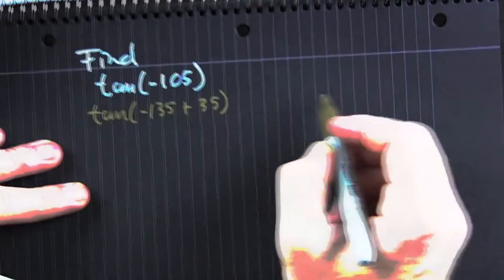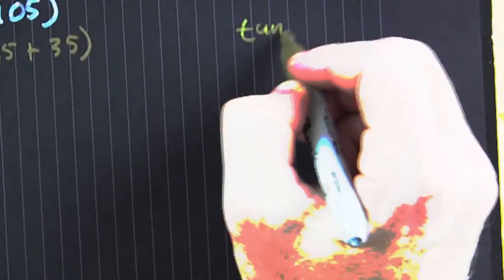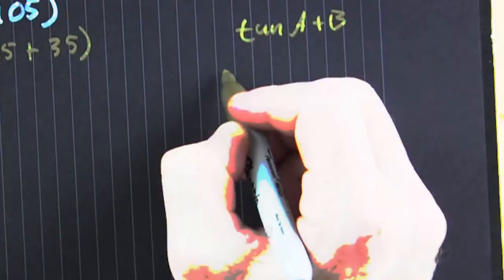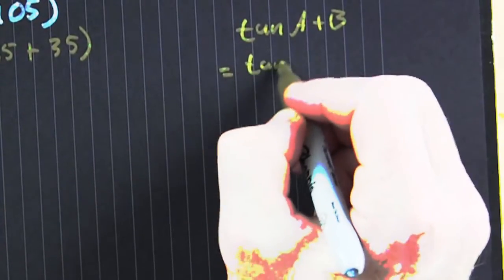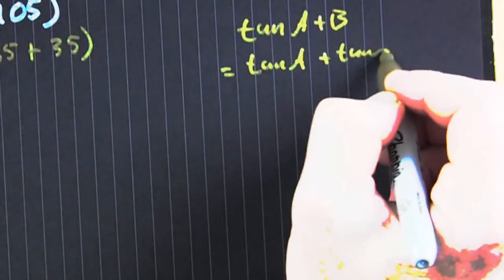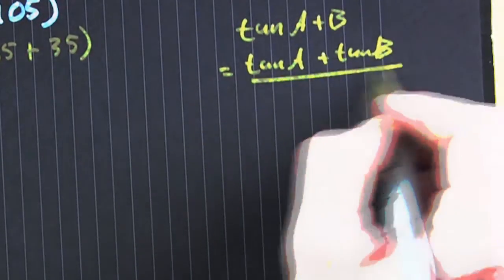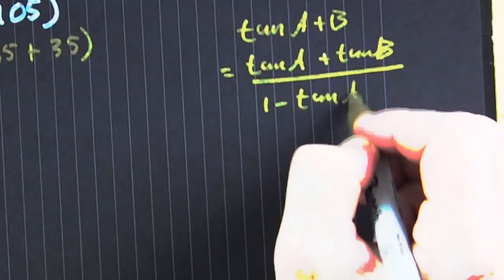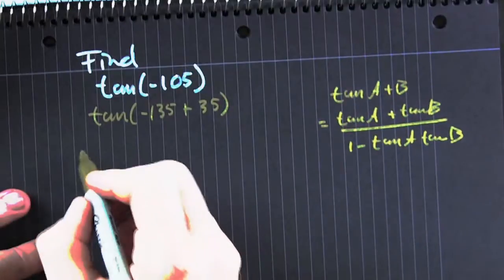So break that up. Oh, I see you're using the sum of tangents. The sum of tangents looks like this: tangent of A plus tangent of B, all over 1 minus tangent A tangent B. Now let's see how that's applied.